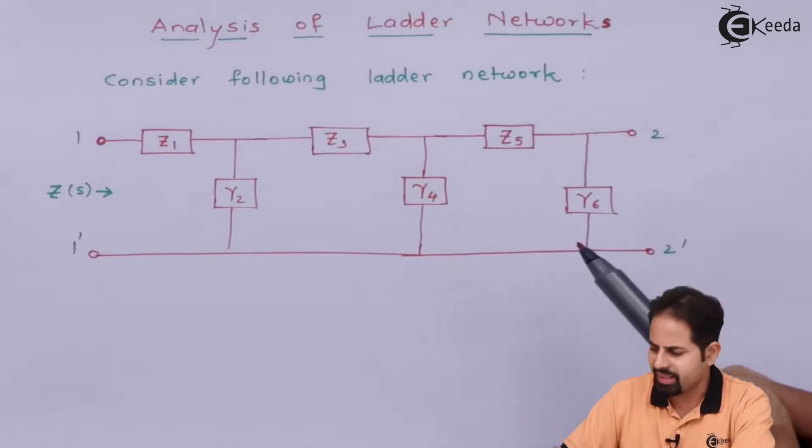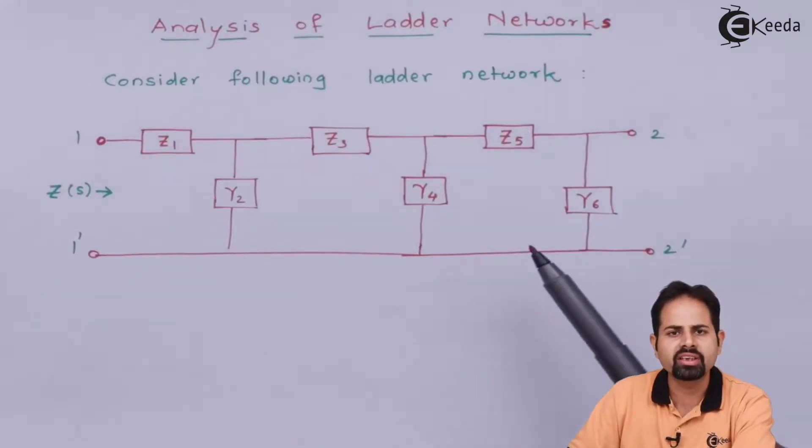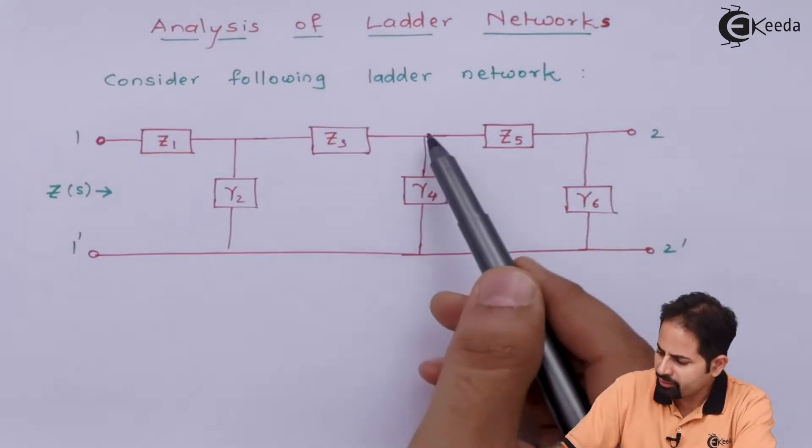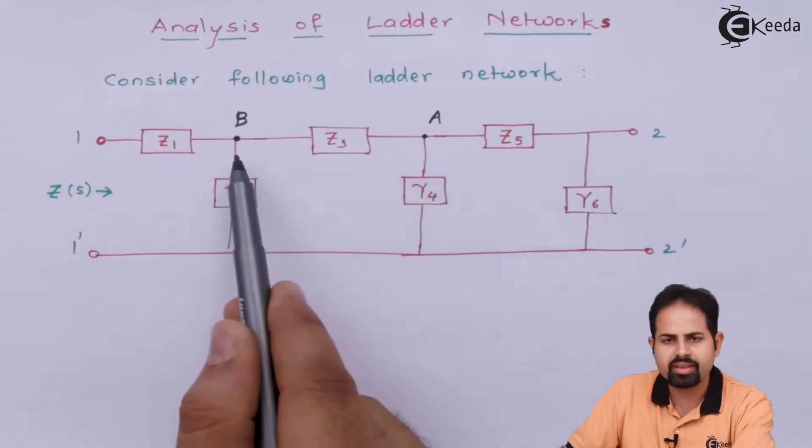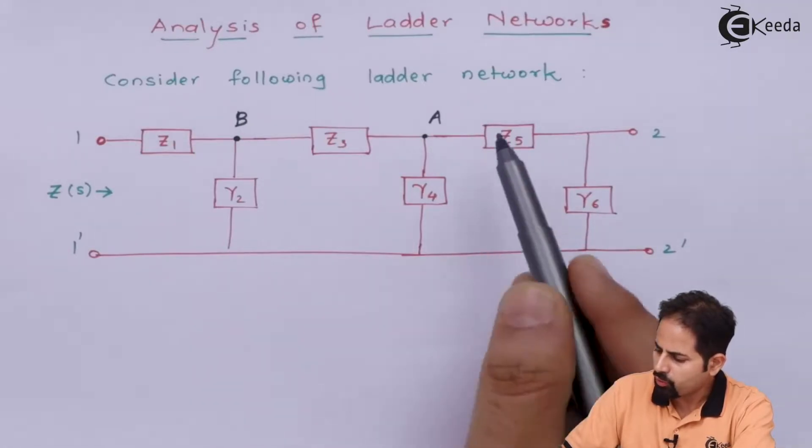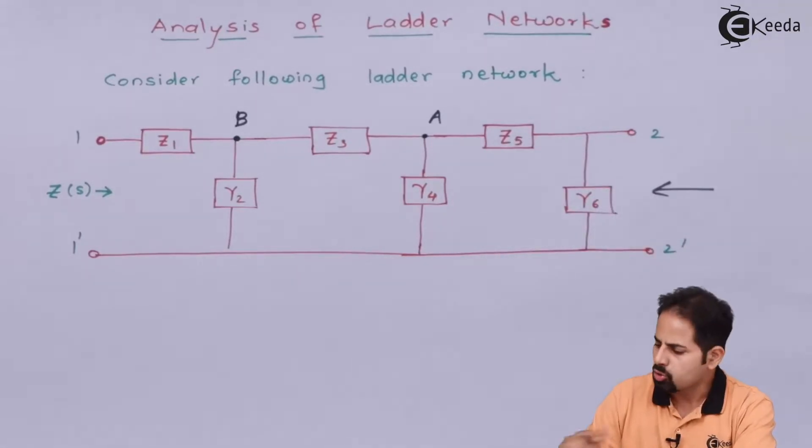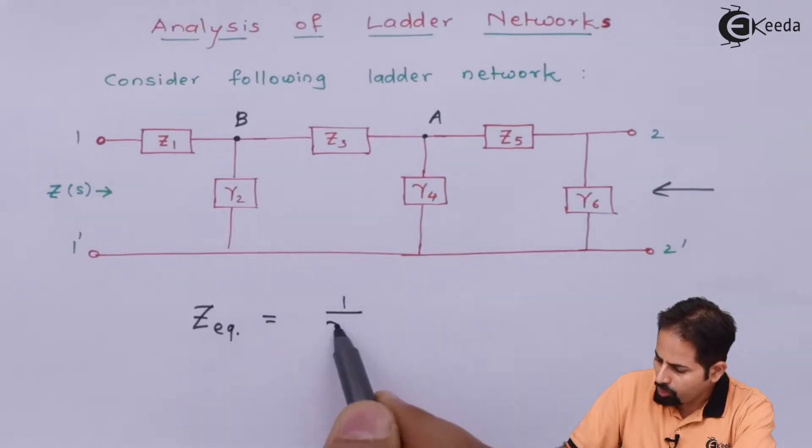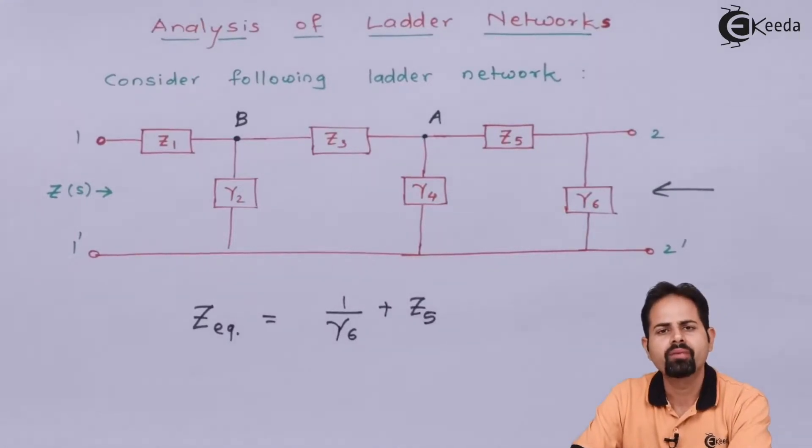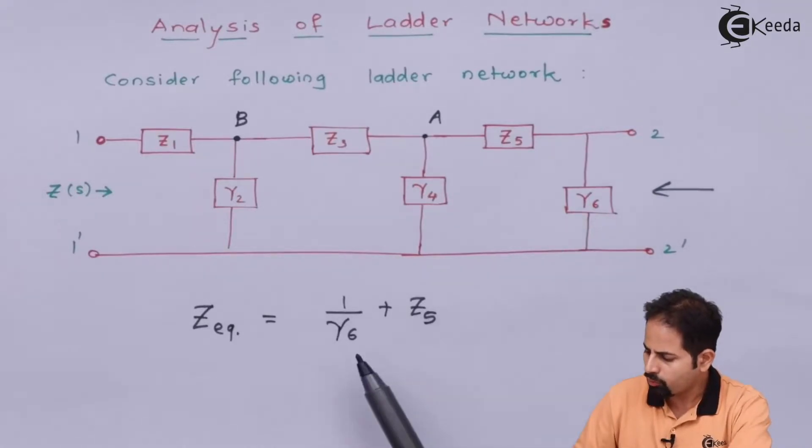Here I can see there is admittance Y6 which is added with this Z5. So if I want to add both, because this Z5 is impedance and this is admittance, I will have to inverse this and then add with Z5. So let us give some name to this point. This is A and this point is B. So first we will calculate the impedance which is seen here and add Z5 and Y6. While adding them, the equivalent impedance will be Z equivalent equals 1 over Y6 plus Z5. This is because Z5 is in series and Y6 is in parallel. So it will be 1 over Y6 plus Z5.